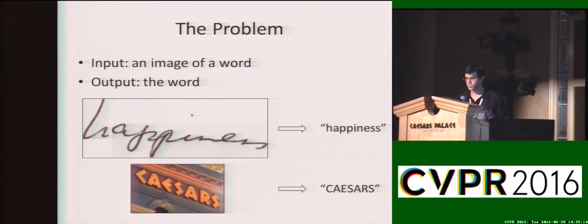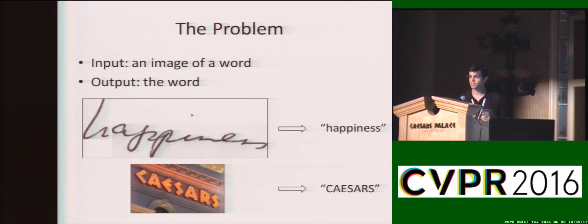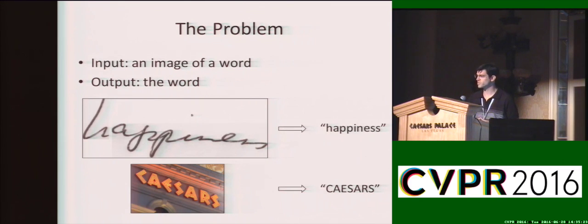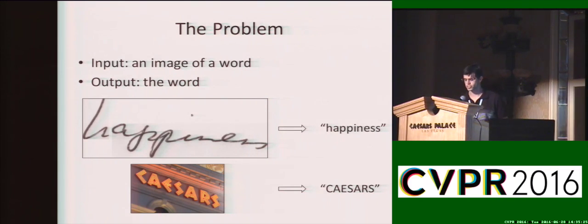Given an image of a word, we wish to provide the image text. If the word is handwritten, we call it handwriting word recognition. If the word is part of a scene, like an image from Google Street View, we call it scene text recognition.